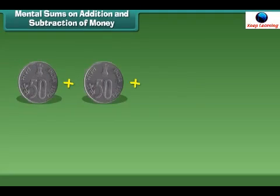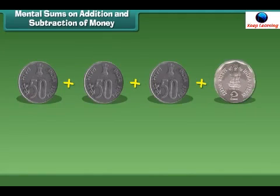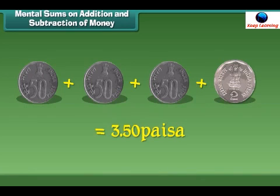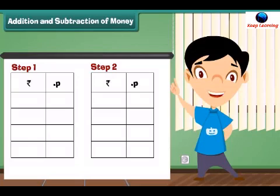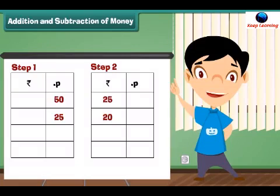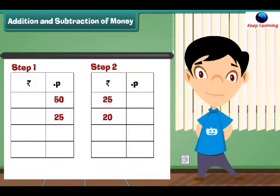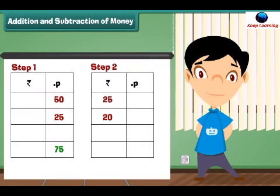Now I have 3 fifty-paise coins and a 2 rupee coin, which is equal to 3 rupees 50 paise. Let us learn how to add 25 rupees 50 paise and 20 rupees 25 paise. Step 1: Add the numbers in the paise column. 50 plus 25 is equal to 75 paise. Write 75 under the paise column.